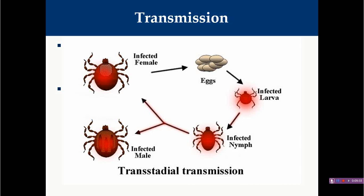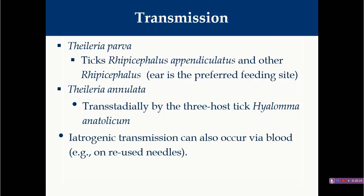The third mode of transmission is iatrogenic transmission, where veterinarians are responsible for transmission of disease due to unavoidable circumstances. If veterinarians reuse needles already used in infected animals, those needles contain small quantities of infected RBC or infective components responsible for transmission of theileria. When such infected needles or blades are used in healthy animals, they are responsible for transmission of this disease — known as iatrogenic transmission.